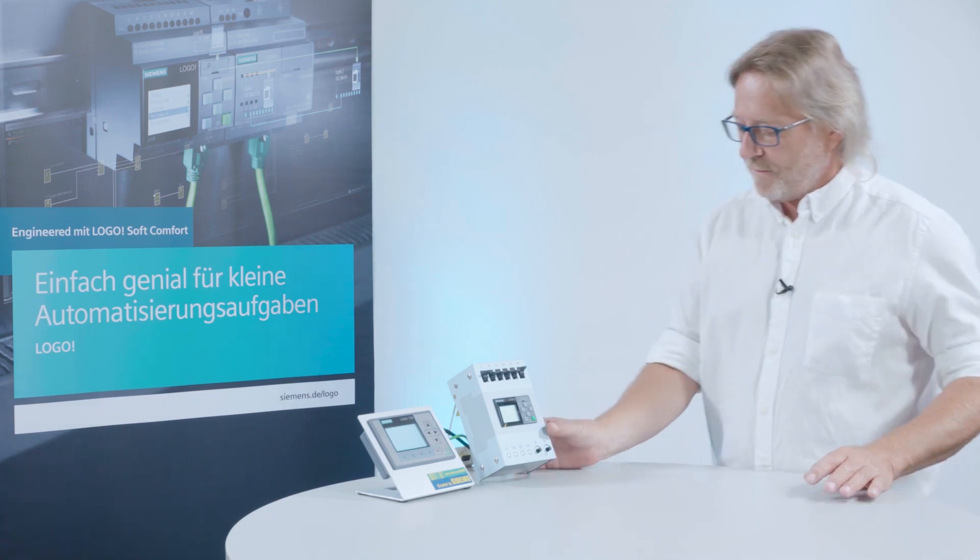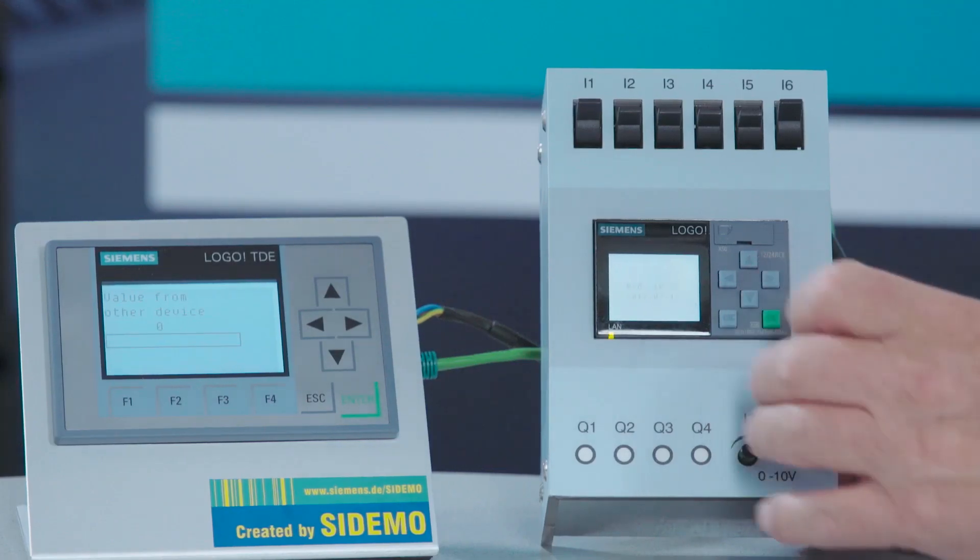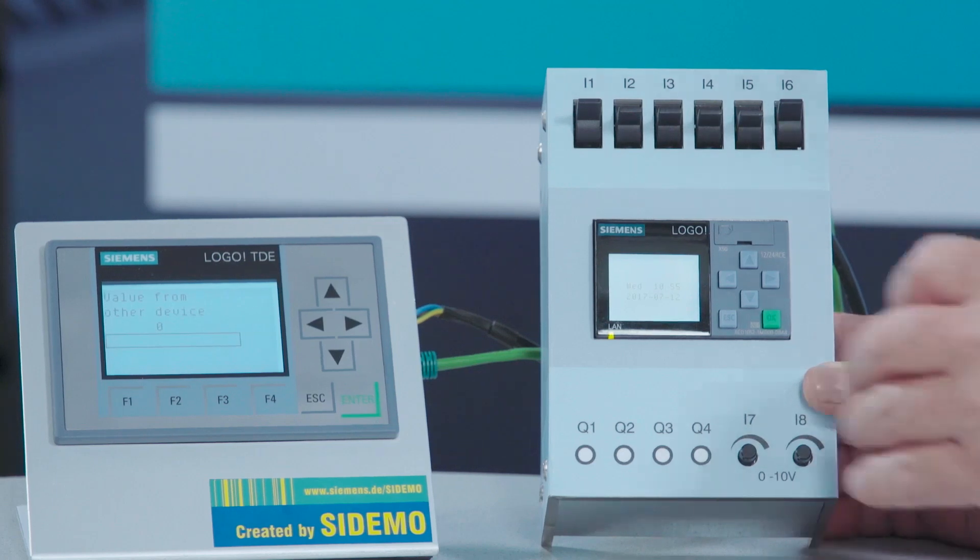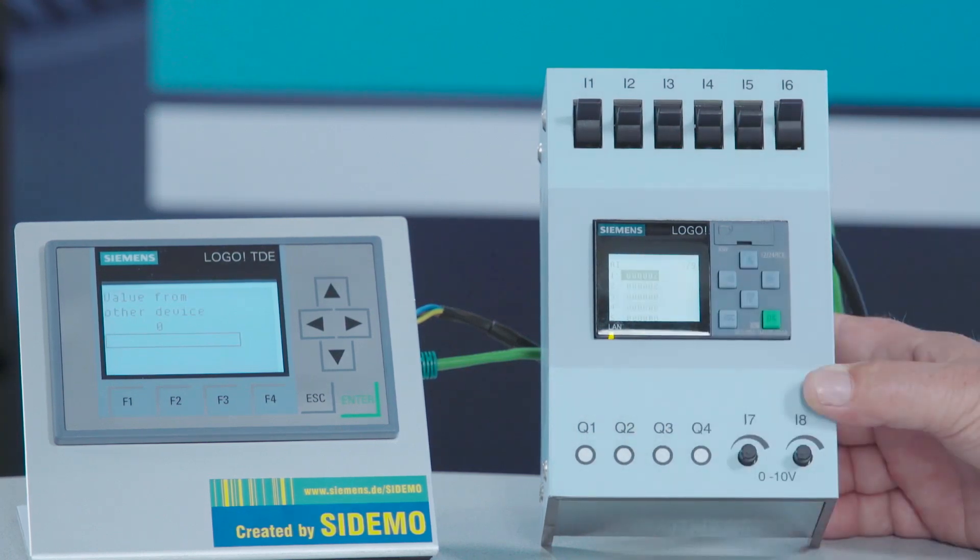We switch through the modes in the Logo display until the time is displayed. And then we click the arrow right button in the status menu until analog inputs are shown.